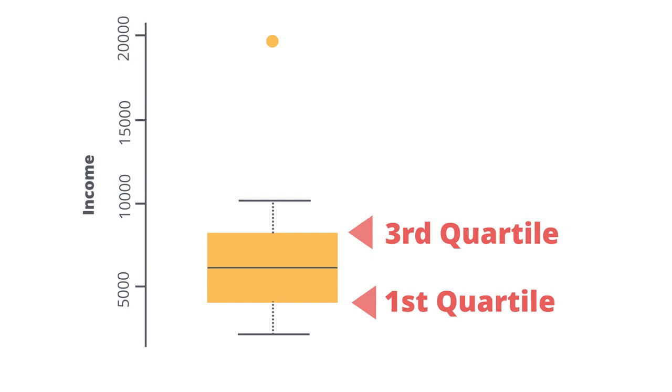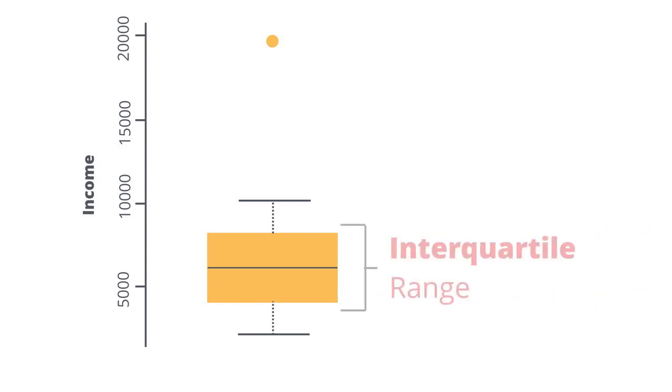Everything in between, shown in the orange box, falls into the interquartile range. Its value is the difference between the third quartile value and the first quartile value.